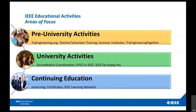Our educational activities are focused in three areas. First, pre-university activities: Tri-Engineering summer camps, teacher volunteer training, summer institutes, and Tri-Engineering Together — really a clearinghouse for all kinds of outreach to K-12 students. At the university level, we do coordination on ABET accreditation, and we partner with the Education Society to provide resources to faculty and students. In continuing education, which is more focused towards industry members in their careers, we have e-learning, certificates programs, and the IEEE Learning Network.